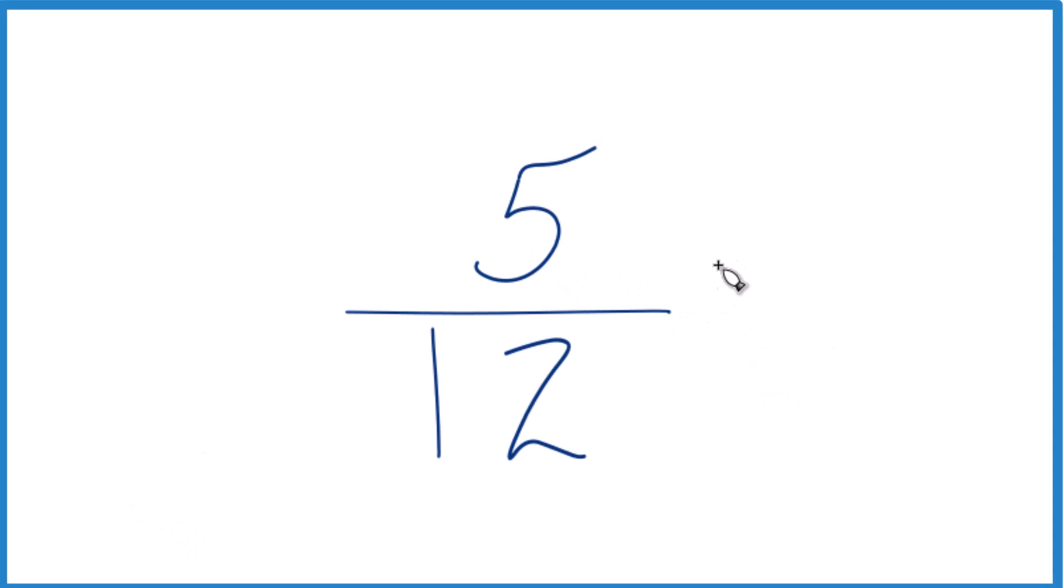So let's figure out what the fraction 5/12, 5 over 12, is equal to as a decimal. Essentially what we're asking is what is 5 divided by 12 as a decimal. And since 5 is smaller than 12, we know our answer is going to be less than 1.